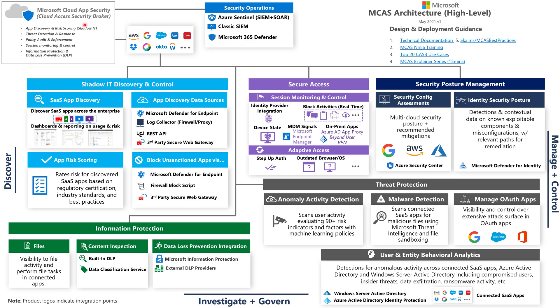Let's break down each capability, starting with Shadow IT Discovery and Control. MCAS can go out and discover SaaS application usage within your environment by collecting data from data sources. One of those data sources could be Microsoft Defender for Endpoint, which is built into Windows 10. When integrated with MCAS, it can send all of that network data from the client to MCAS so you can see what apps are in use.